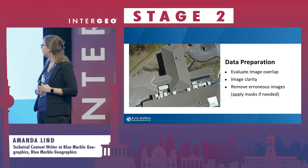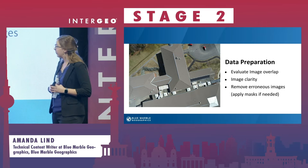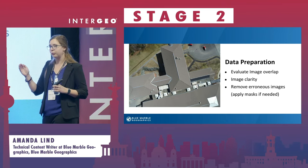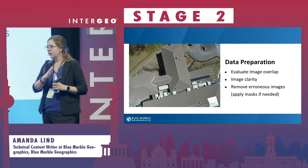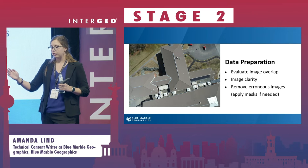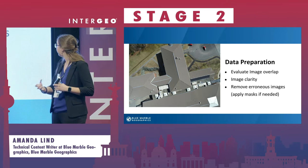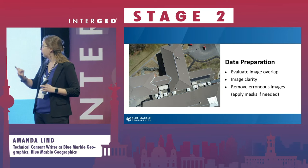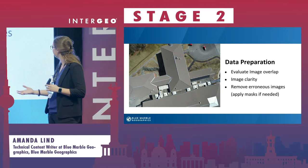The second part of data preparation is to evaluate the image overlap — that's to make sure there's a 60% front-to-back and a 40% side-to-side overlap between the images. The more often an object appears in an image, the more accurate it's going to be and the more likely it's going to be reconstructed in the final output. You want to make sure the images are clear — high-resolution images will be more likely to create high-resolution data.